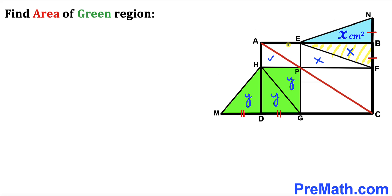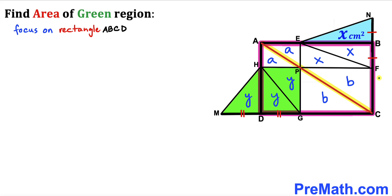Furthermore, this triangle area is congruent to this triangle area — I'll label it lowercase A, so this area is A as well. And this triangle area is congruent to this other triangle area — I'll label it lowercase B, so this area is B as well. Now let's focus on rectangle ABCD along with diagonal AC. This diagonal is going to divide the total area into two equal parts.